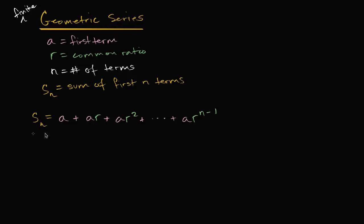We want to come up with a nice clean formula for evaluating this, and we're going to use a little trick to do it. We're going to think about what R times the sum is and subtract that out. So we're going to take negative R times the sum, and then we can just add these two things together — and you'll see that it cleans this up nicely.